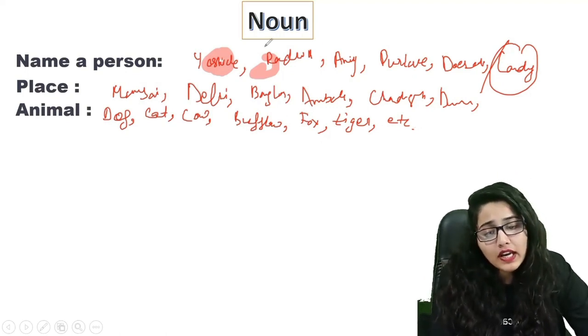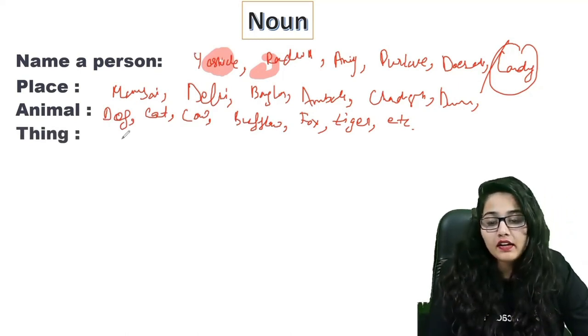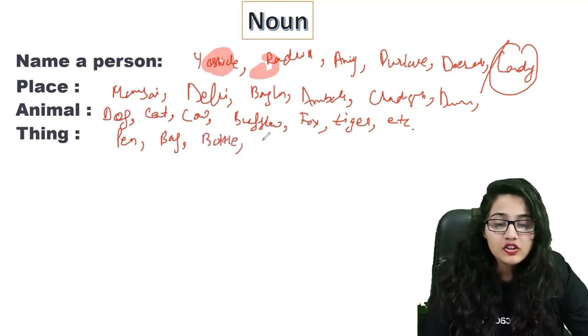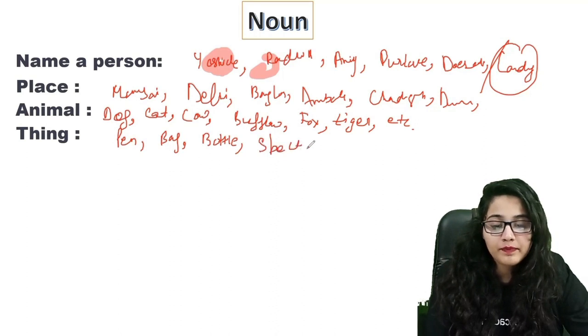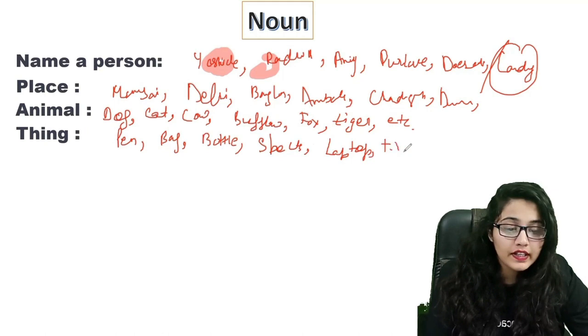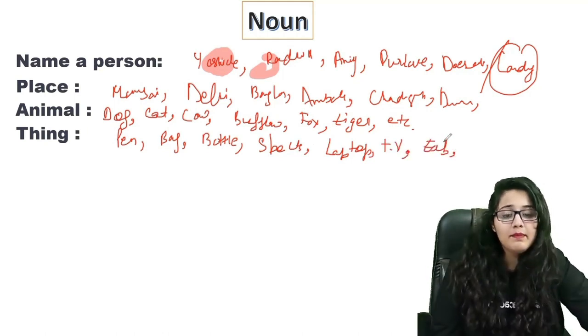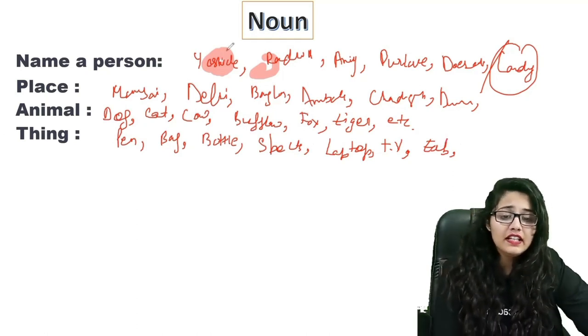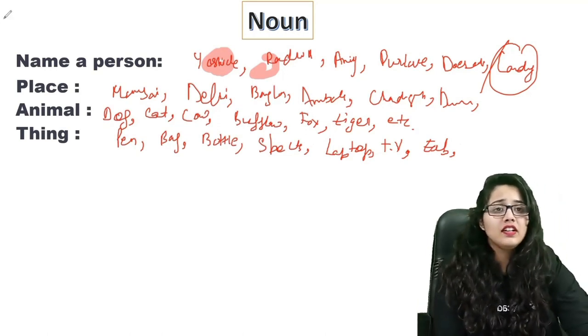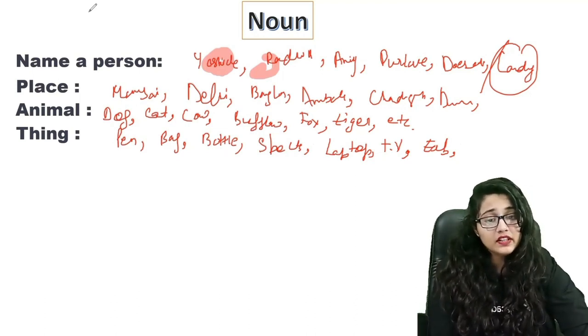What are things? Pen, bag, bottle, heart, specs, laptop, TV, television, tab, all these things will come in our things. So living, non-living, all these things will come in our nouns.